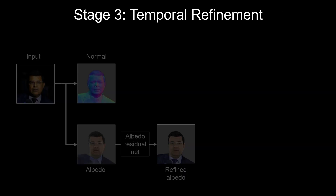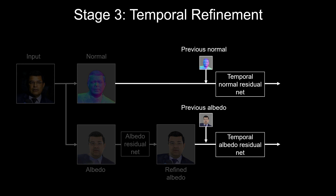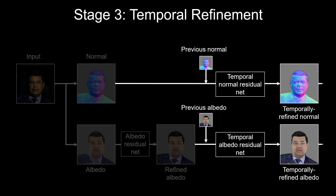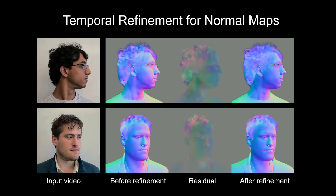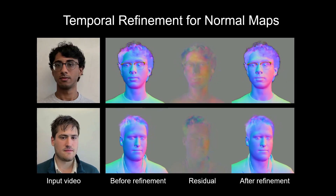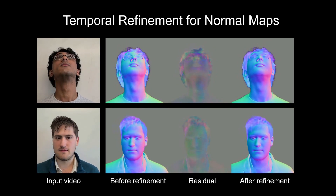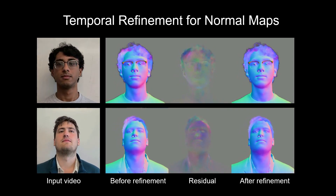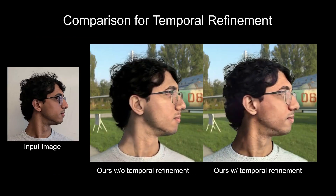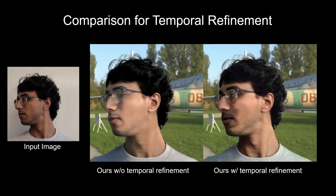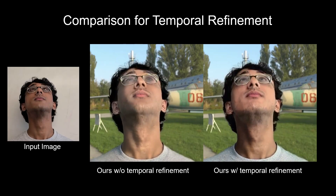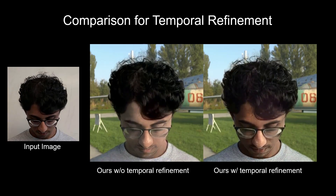Finally, in the last stage, we extend to videos and modify the network to ensure temporal consistency. We add two networks to refine the albedo and normal maps conditioned on previous estimations to make sure they are consistent with prior frames. After the refinement, we are able to synthesize much smoother videos, like shown here.